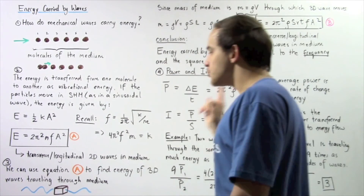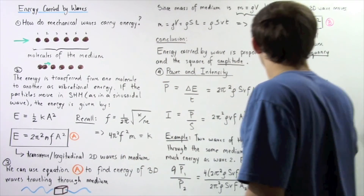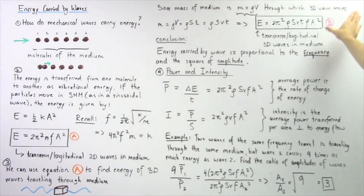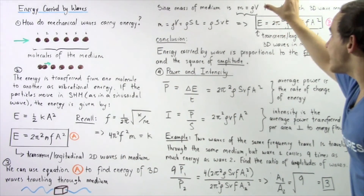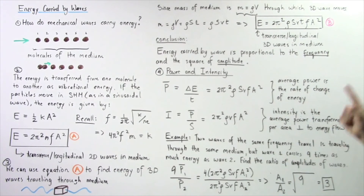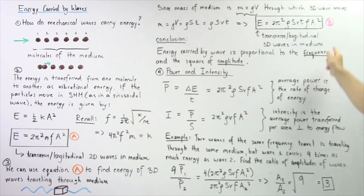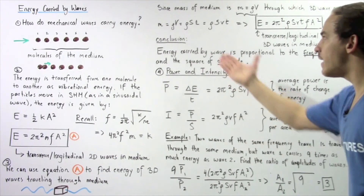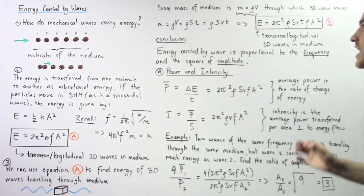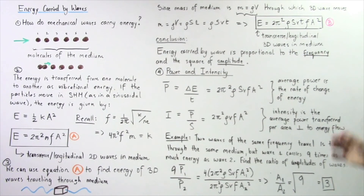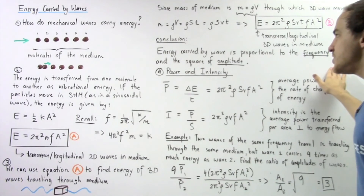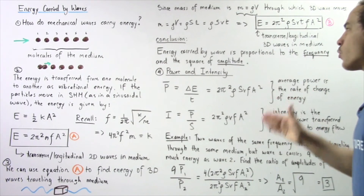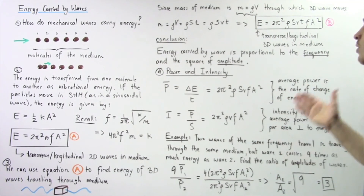Just like equation A, let's call this equation B. In equation B we see that energy is directly proportional to the frequency and directly proportional to the amplitude squared. So we arrive at the following conclusion: energy carried by mechanical waves is proportional to frequency and proportional to the square of the amplitude.